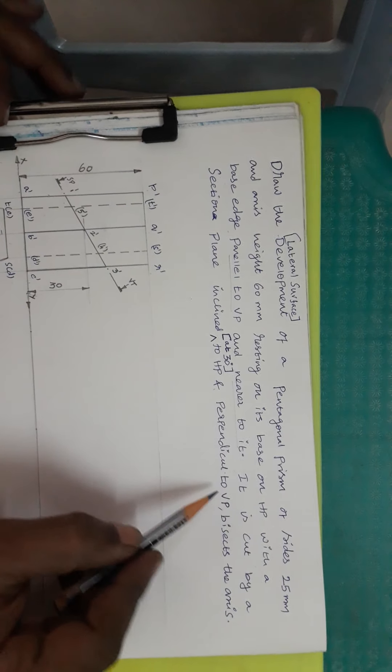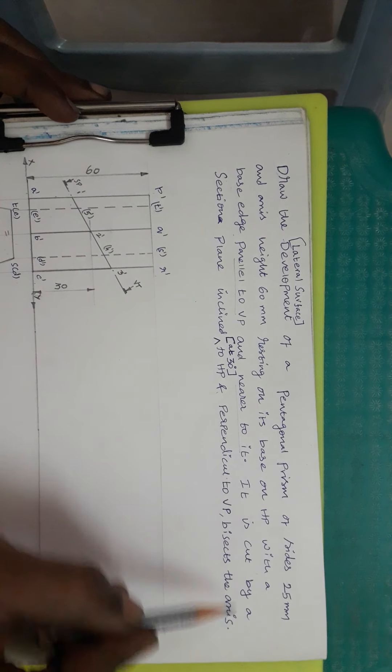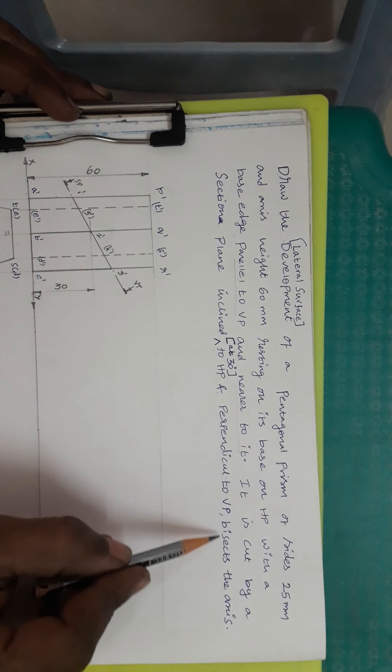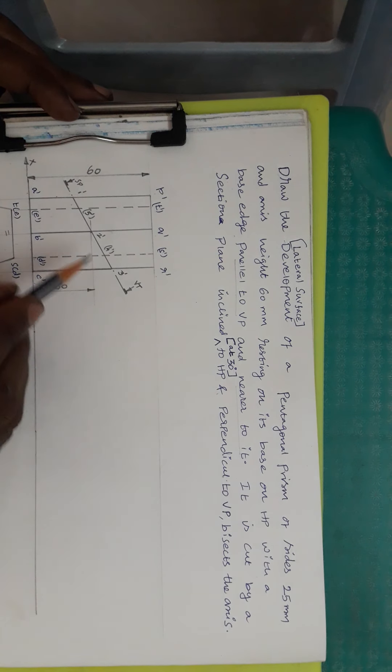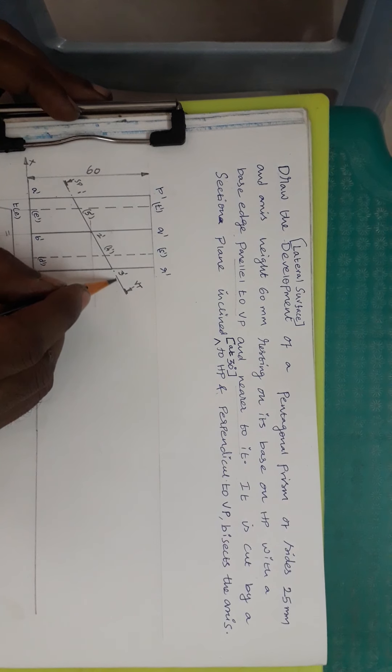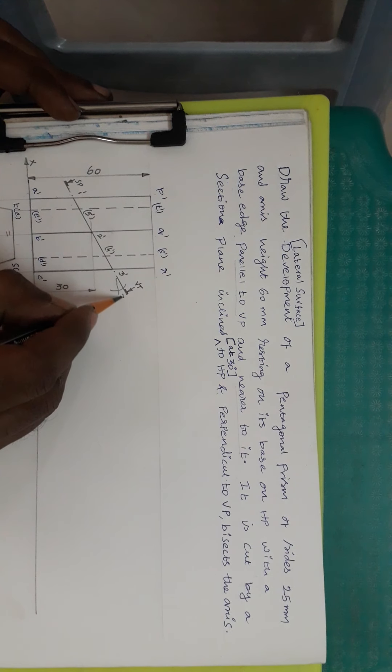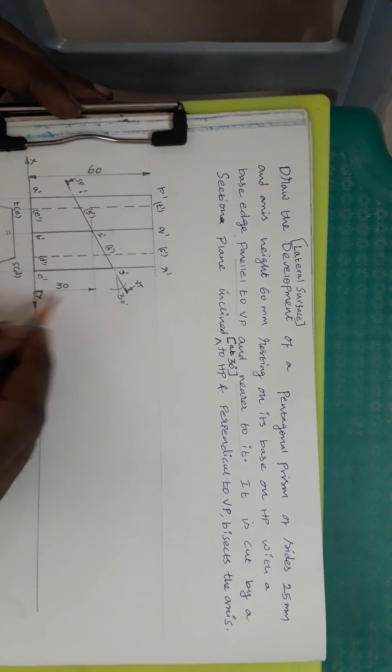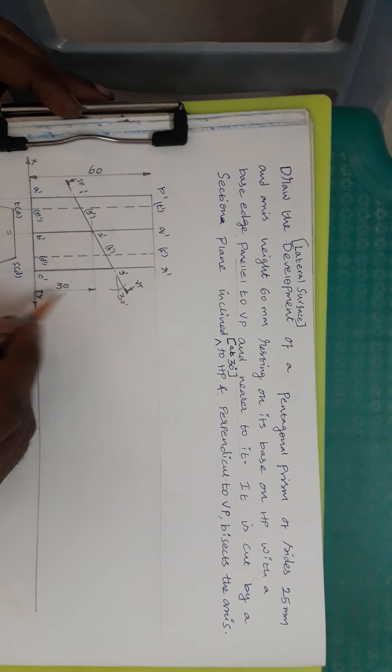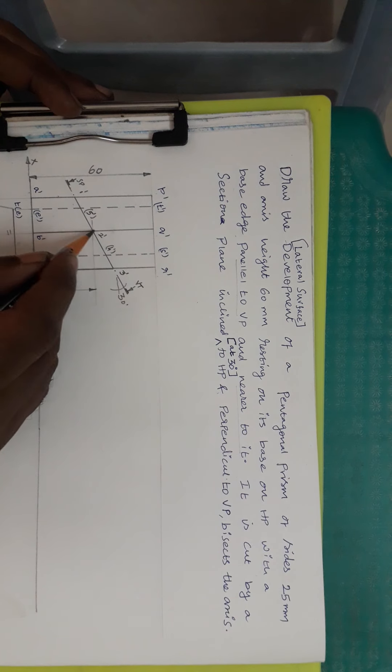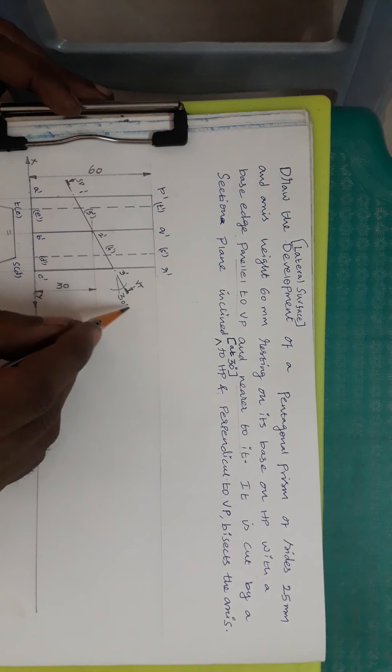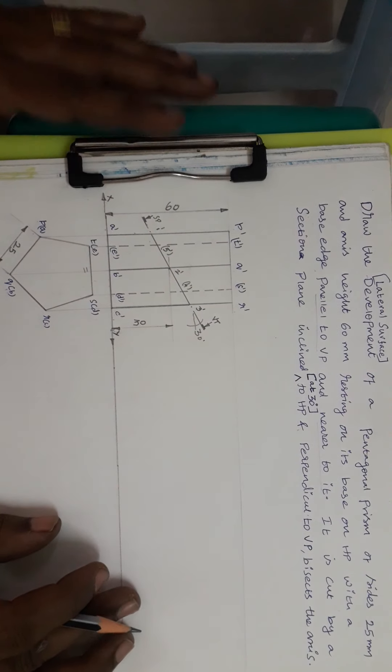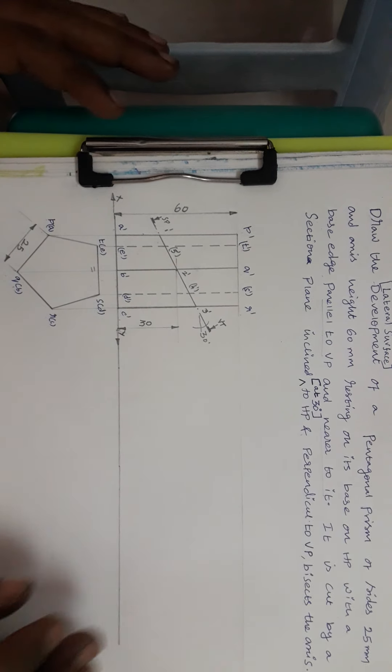As per the question, it has a cutting plane. It is cut by a section plane inclined at 30 degrees to HP and perpendicular to VP which bisects the axis. So the axis is being cut into two equal halves. We will take 30 degrees and I am drawing the cutting plane. Up to this, you could have learnt in the previous section.